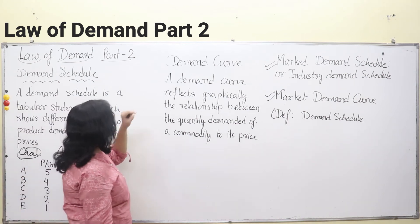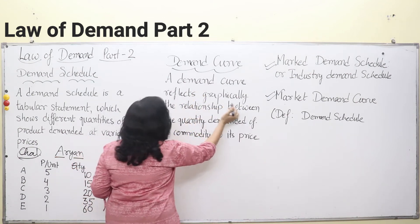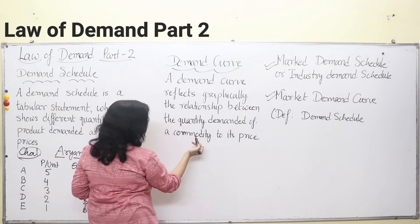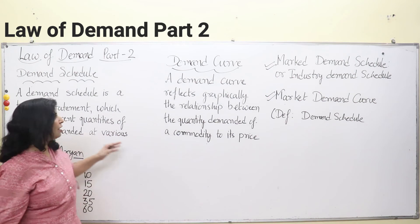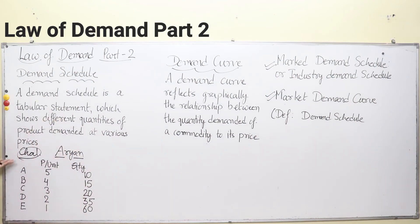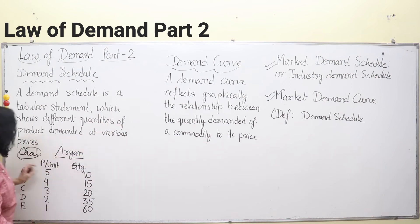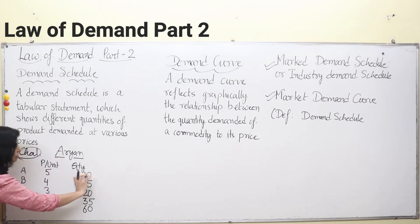The demand curve graphically reflects the relationship between the quantity demanded of a commodity and its price. It is the graphical representation of a demand schedule. In one simple definition: the graphical representation of a demand schedule is your demand curve. The schedule is in tabular form with rows and columns, and here we will draw the corresponding graph.